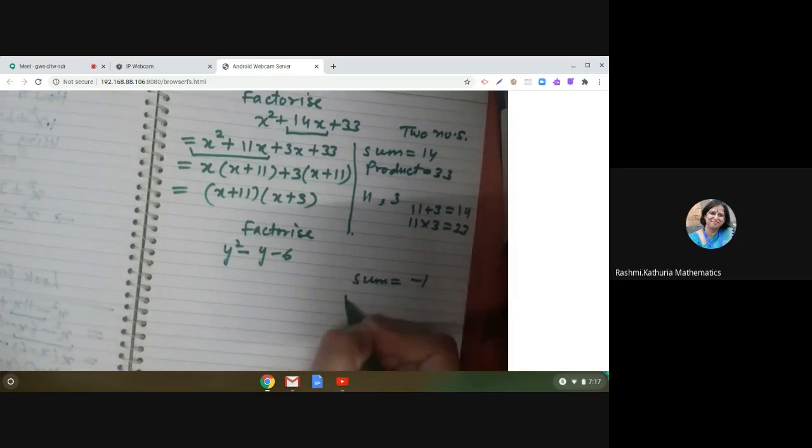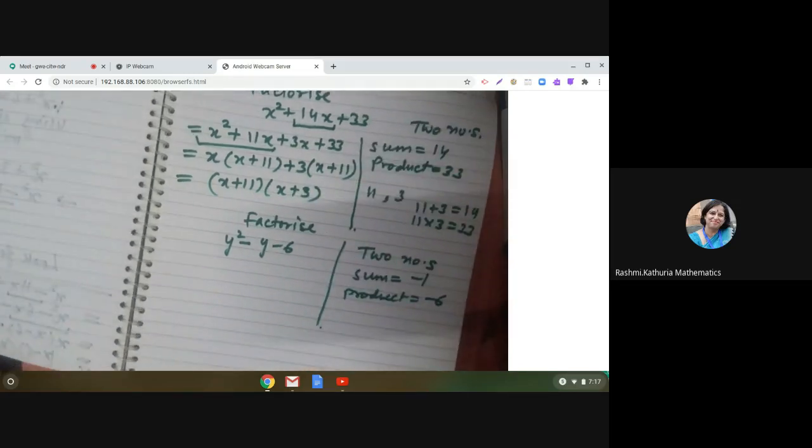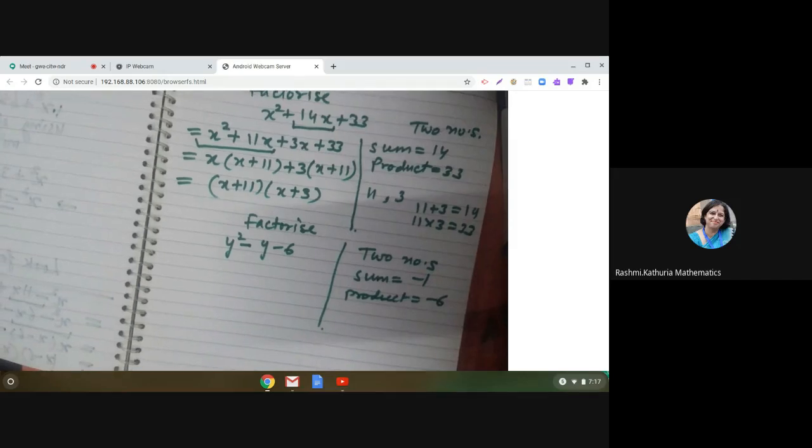Minus 1 and product is the constant term. That is minus 6. So we have to look for two numbers whose sum is minus 1 and product is minus 6. Very good. Tell me. Keep thinking.